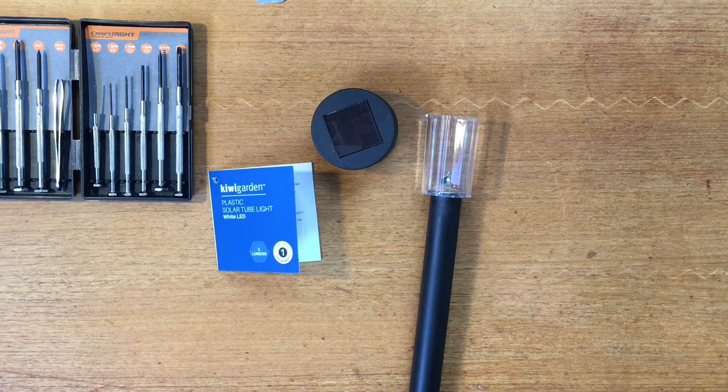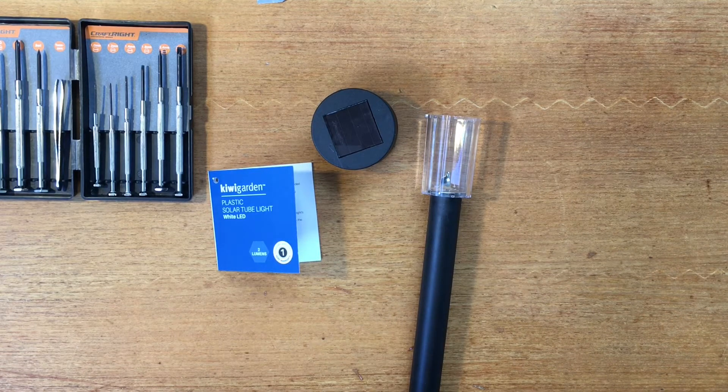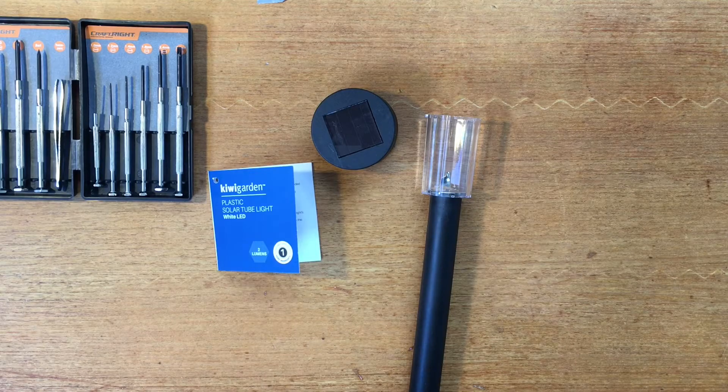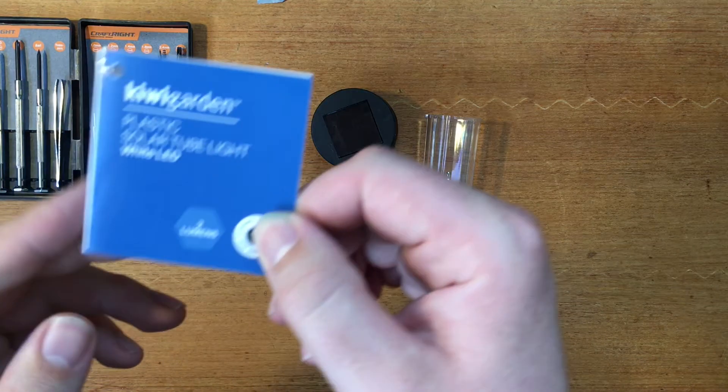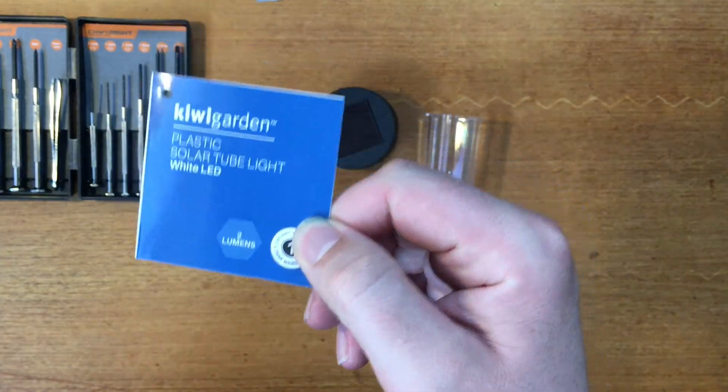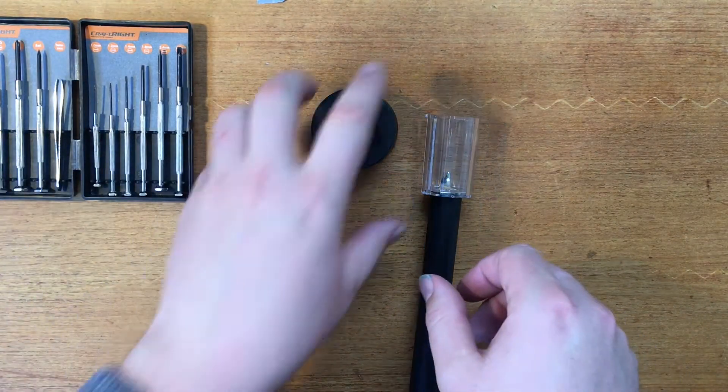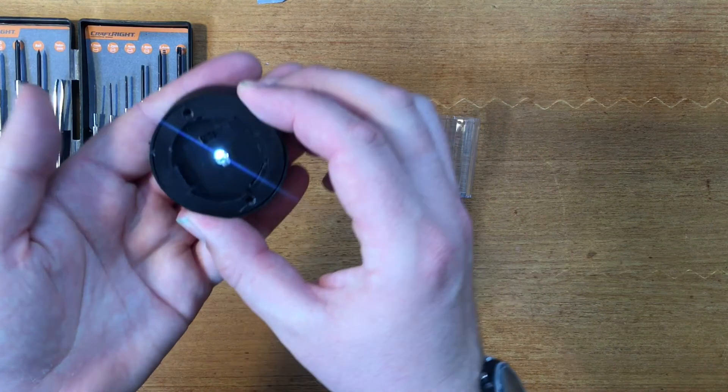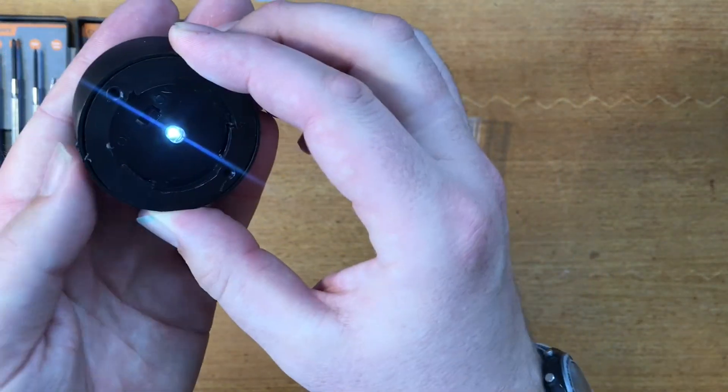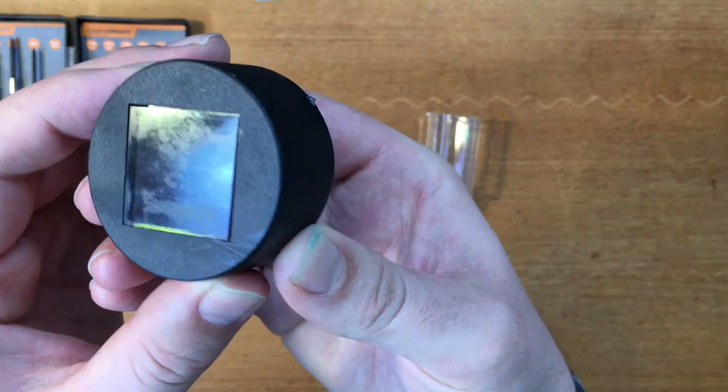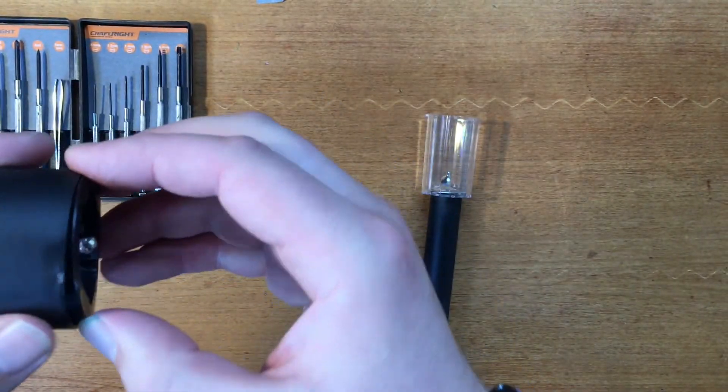Hello again everyone, I've decided to delve into how a simple solar garden light works. I've got this one here that puts out a whopping two lumens. It costs two dollars. Here's the light, it's actually not too bad, it's pretty bright with a crappy solar panel.